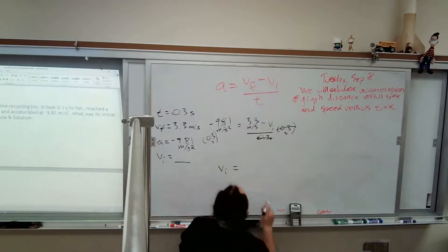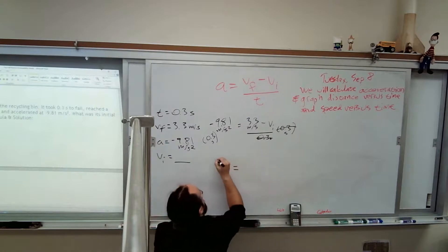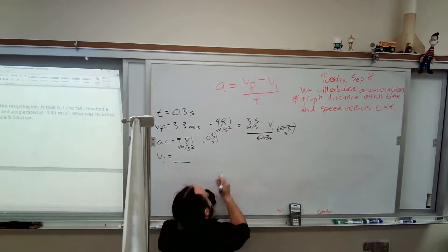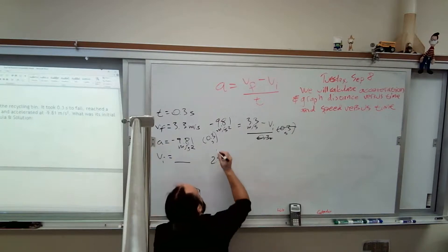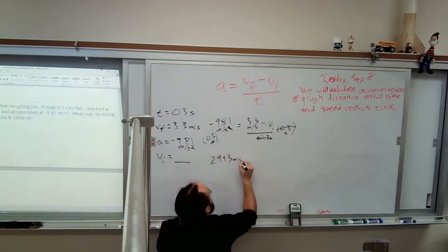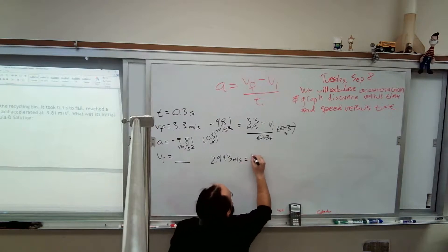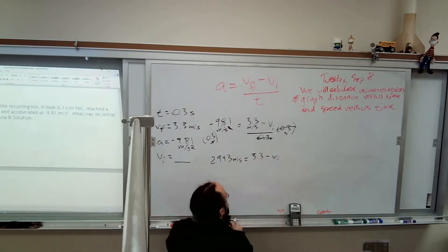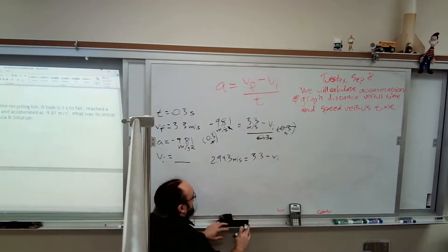I got 2.943. So 2.943. I got seconds over here. Seconds times meters per second. There's a second on bottom. And then that cancels with one of these seconds. So now I got meters per second down here. And that equals 3.3 minus Vi.